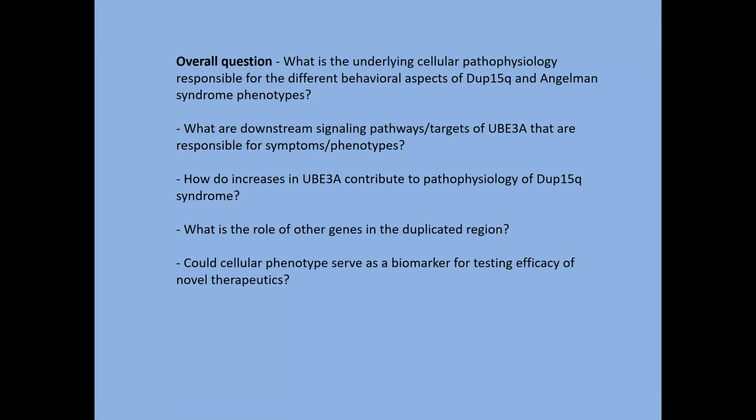Some of the questions we're trying to get at with these models are: what is the underlying cellular pathophysiology? The behavioral and cognitive phenotypes between Dup15Q and Angelman syndrome have some things in common and some that are different. What are the downstream signaling pathways and targets of UBE3A responsible for those phenotypes? How do increases in UBE3A contribute to Dup15Q syndrome? And could a cellular phenotype identified in human cells serve as a biomarker or be used to test efficacy of novel therapeutic strategies?